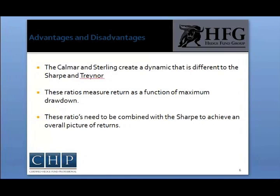Both the Calmar and Sterling ratios bring a new dynamic of risk to the equation and help a portfolio manager gauge risk related to the largest potential annual loss. The returns measured can be at any frequency — daily, weekly, monthly, or annually — as long as they are normally distributed and the returns can be annualized.